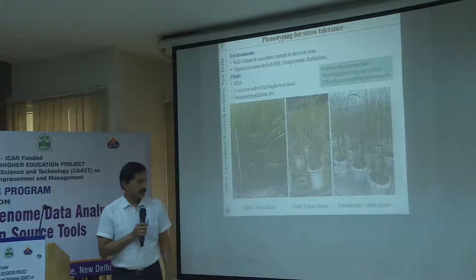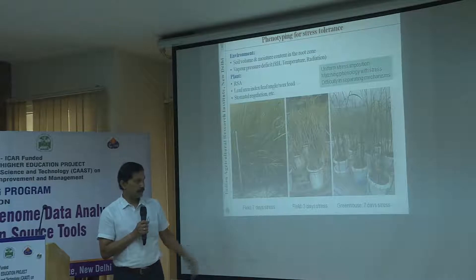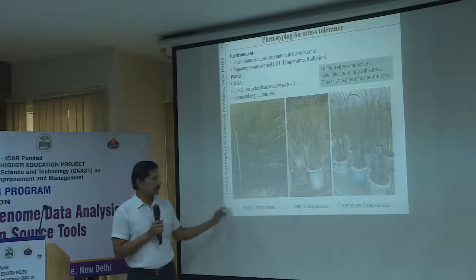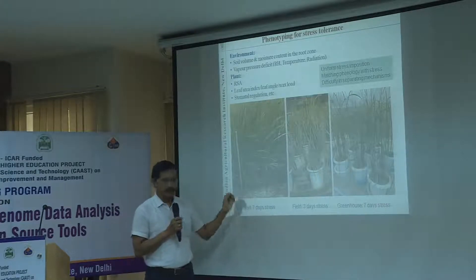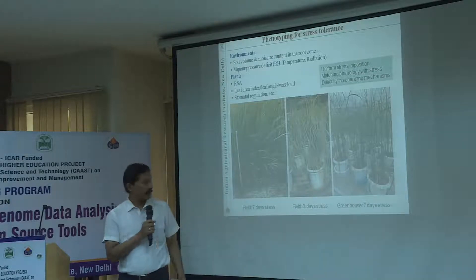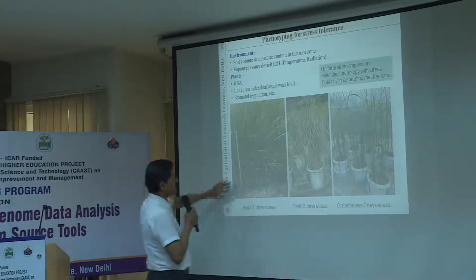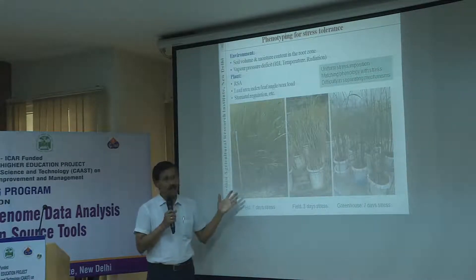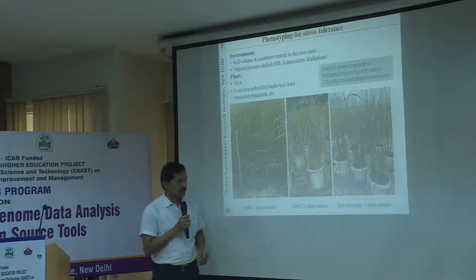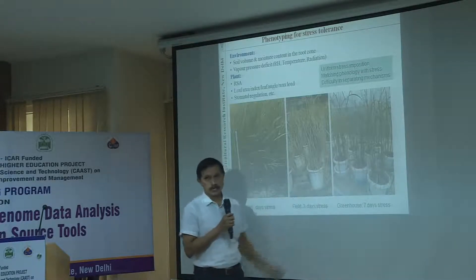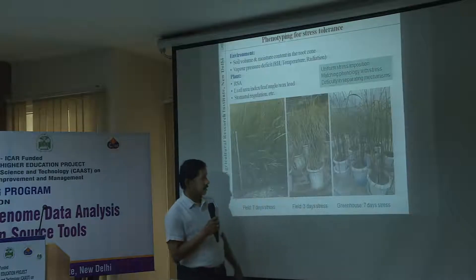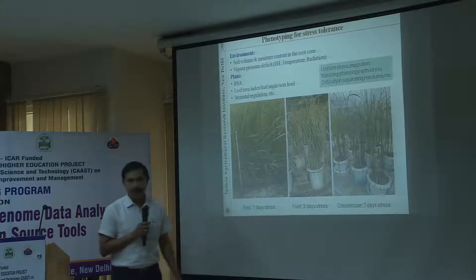This is an example I used to give my students — phenotyping for drought tolerance. If you are screening your plants in the field, this is seven days of stress. You can see the plants are still green and turgid; there is no difference. You are unable to tell that the plant is under stress. Here, plants grown in pots and kept in the net house showed that most plants are dried within three days.